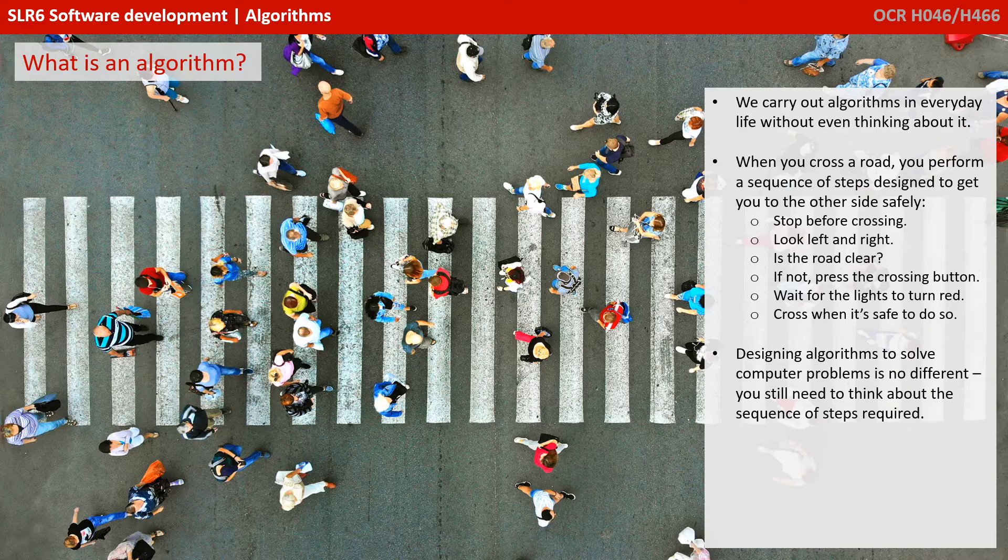is the road clear? If not, press a crossing button. Wait for the lights to turn red, cross when it's safe to do so. This is in essence an algorithm.